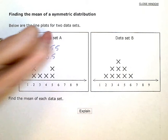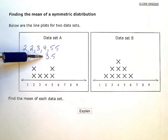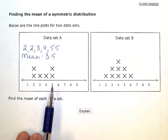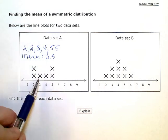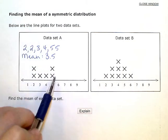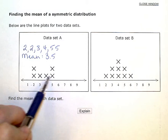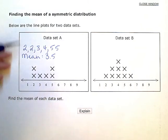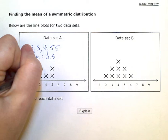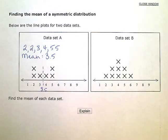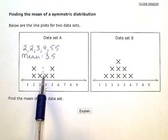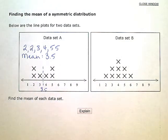Now we can actually see that answer makes sense by looking at this graph. Because I have two x's here, two x's there, right? One each here. These x's form a symmetric or evenly distributed pattern. So the mean, 3.5, is right in the middle where there's three x's on this side and three x's on that side. And they're evenly distributed or weighted on each side of that mean.